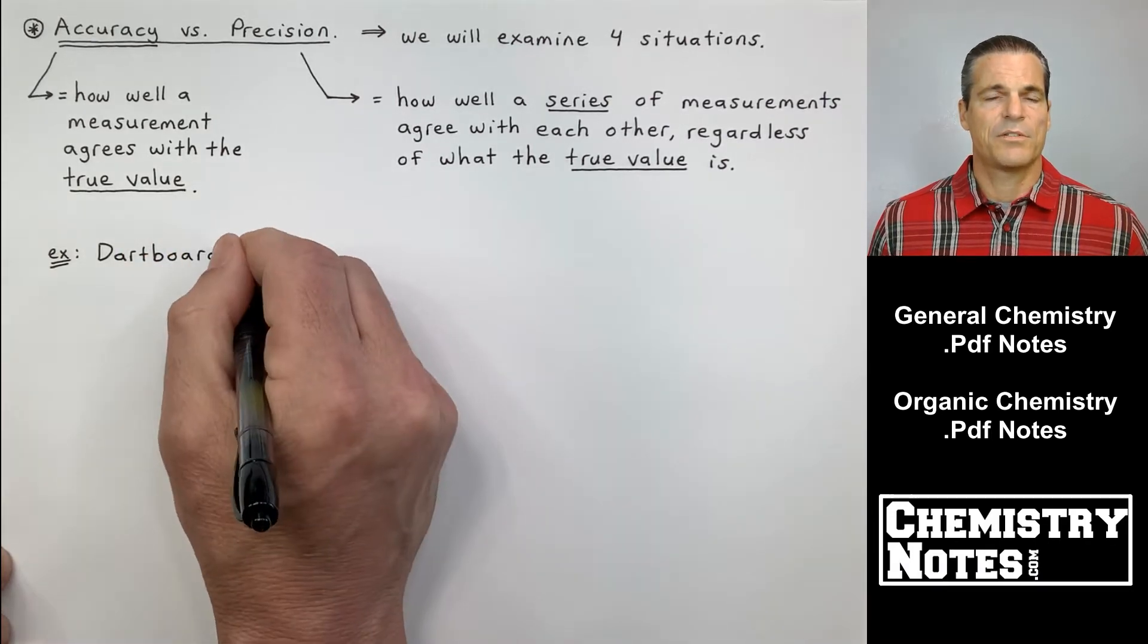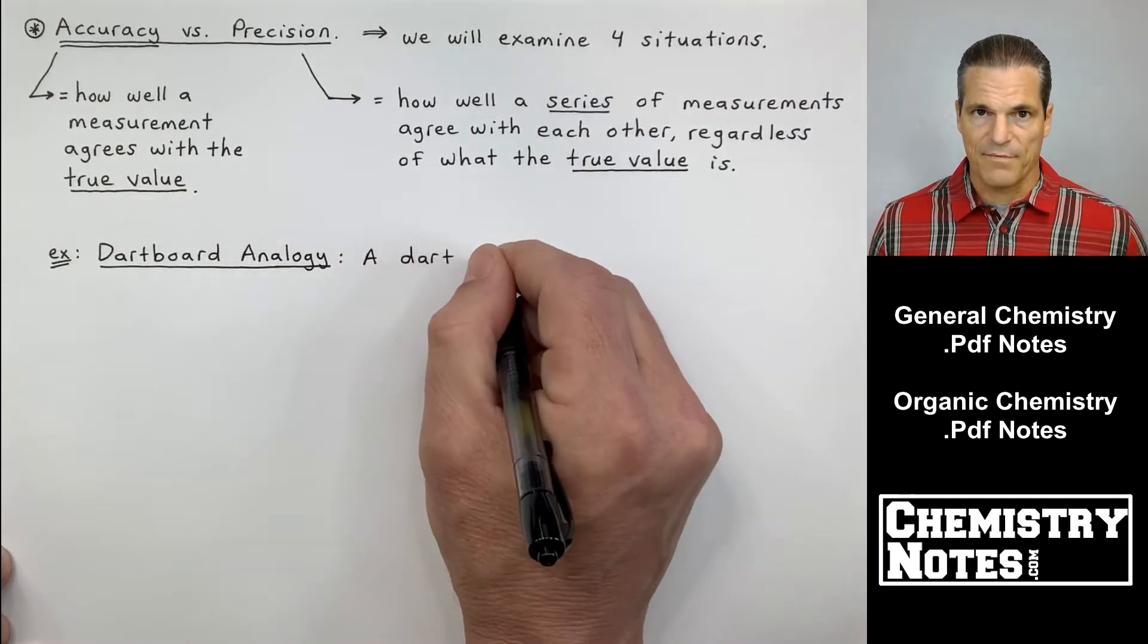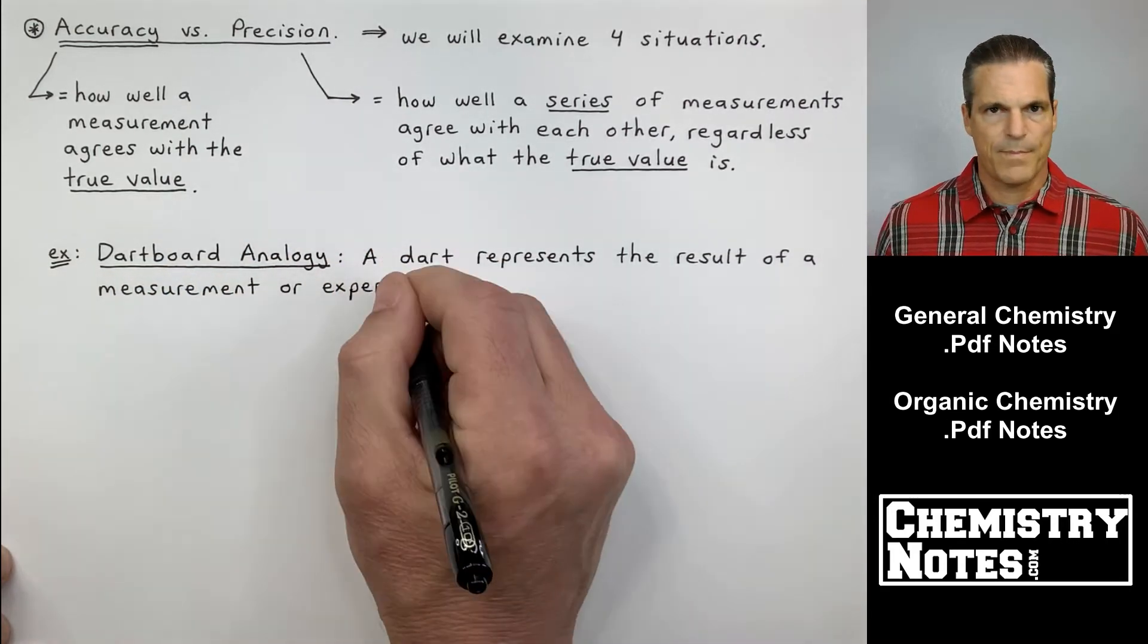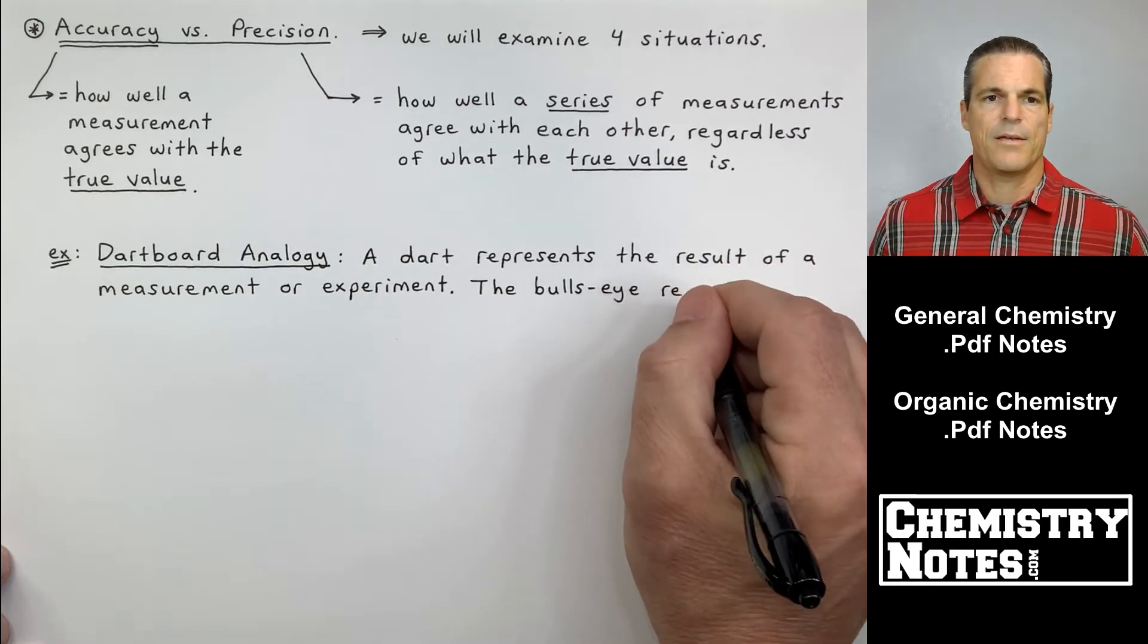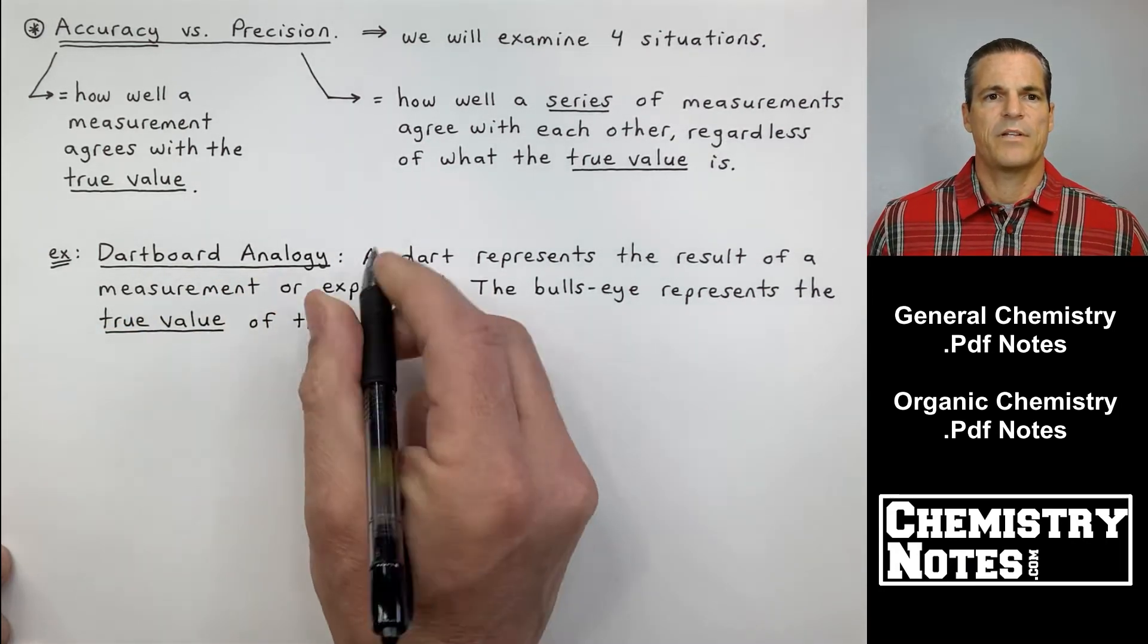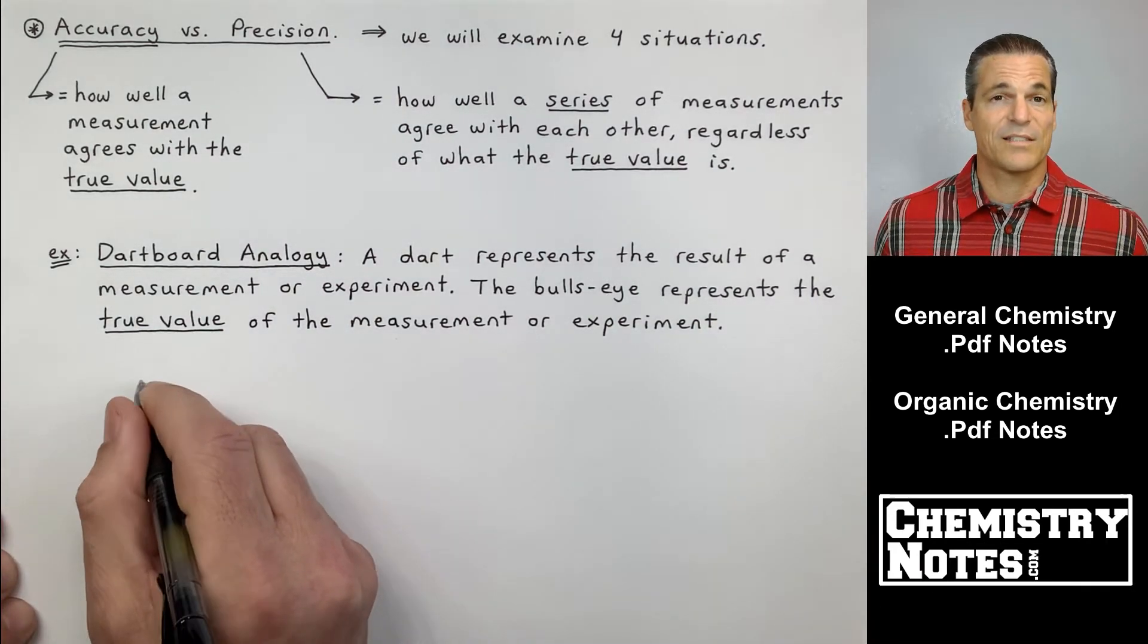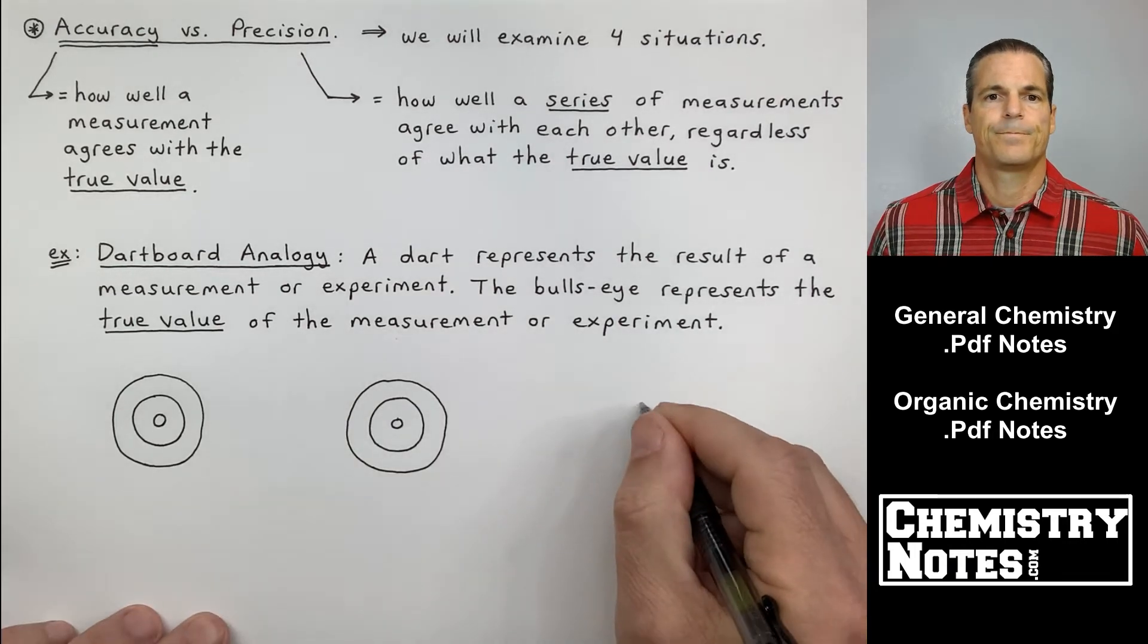We're going to examine four situations using a dartboard analogy. Because we have four situations, we're going to have to draw four dartboards. The dart is going to represent the result of a measurement or experiment. I show darts by drawing a little x. Now, the bullseye represents the true value. So dartboard analogy: a dart represents the results of a measurement or experiment. The bullseye is going to represent the true value or the accepted value or the literature value of the measurement or experiment.